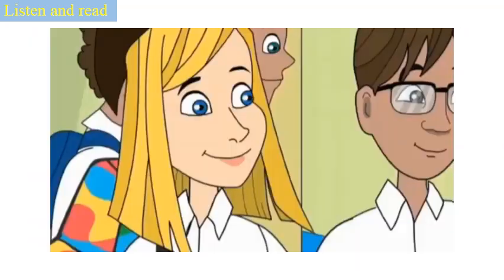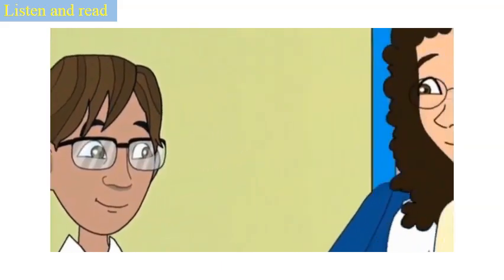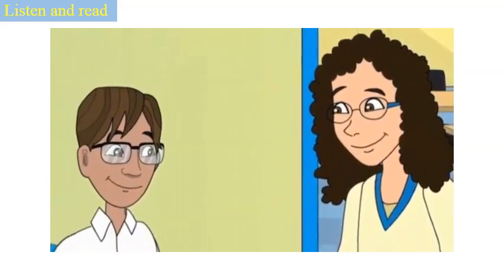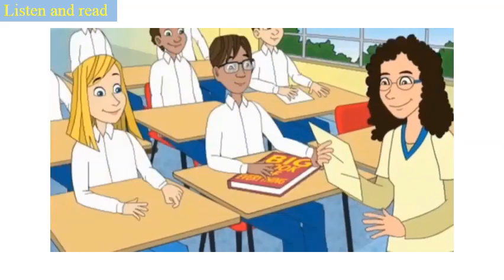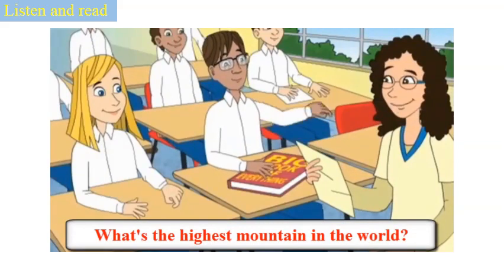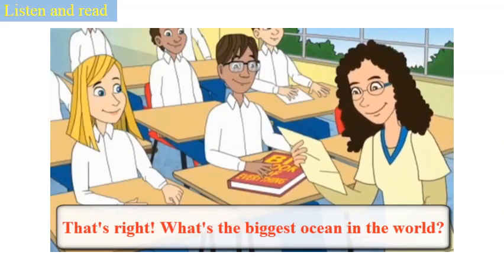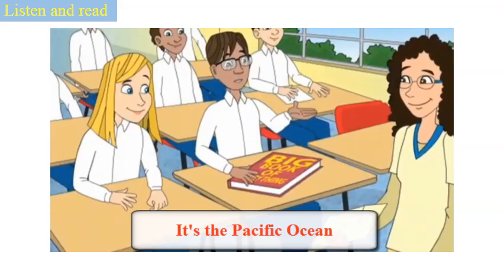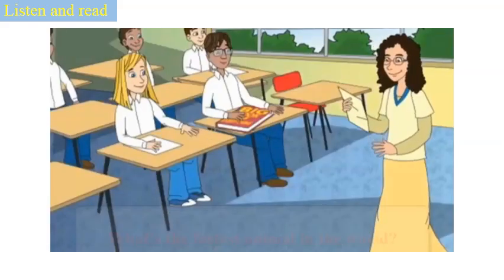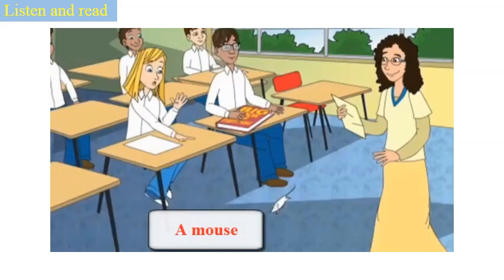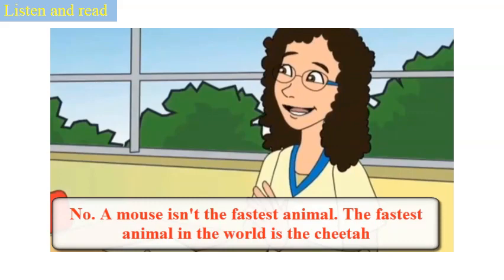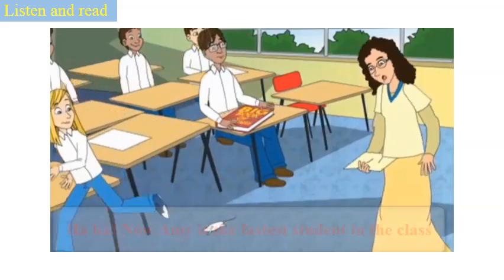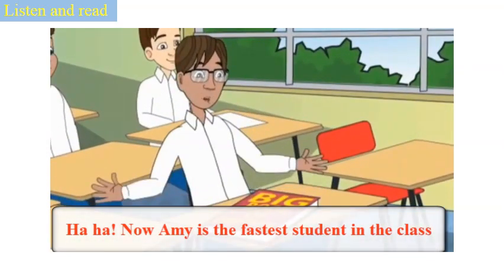Now you will listen one more time and read the story to understand more about it. Hello, I've got a quiz for you today. Great! What's the highest mountain in the world? Mount Everest. That's right. What's the biggest ocean in the world? It's the Pacific Ocean. That's right. What's the fastest animal in the world? A mouse. No, a mouse isn't the fastest animal. The fastest animal in the world is a cheetah. No, a mouse! Look! Ha ha ha! Now Amy's the fastest student in the class.